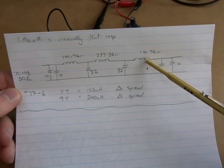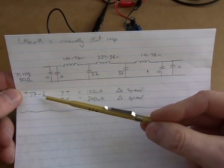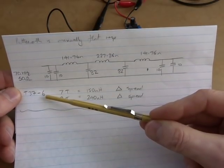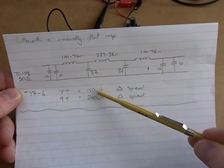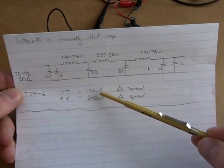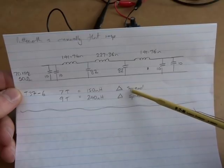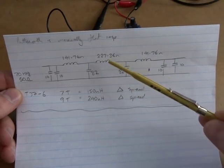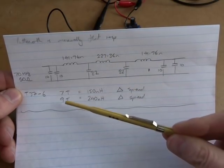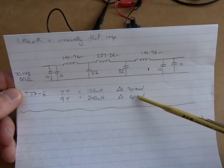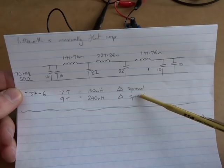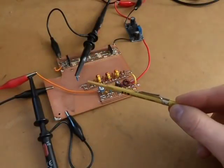What I've elected to use is a T37-6, which gives me the wider frequency range there, and then for the 141 I've just gone with 7 turns, which gives me 150 nH, and I'll try and look to spread the turns there to reduce that down a bit, and then for the 227 gone with 9 turns, which gives 240, and again looking to spread the turns there to get about right. And that's exactly what's been built up there.